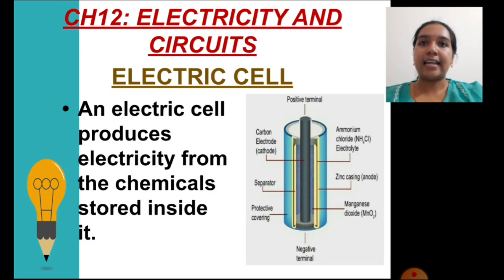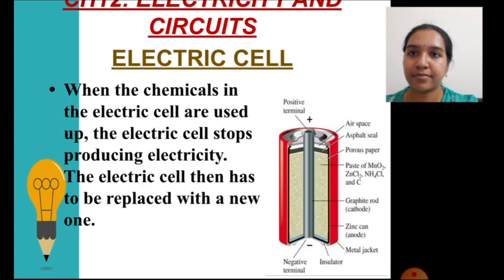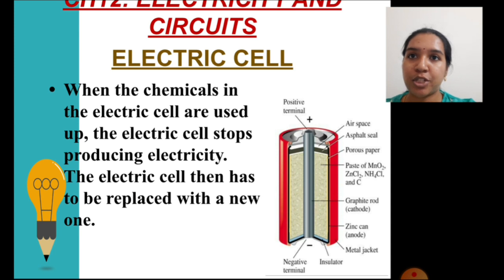Electricity in an electric cell is produced from chemicals stored in it. We usually replace the electric cells in any electric device timely because the chemicals present in an electric cell which produce electricity are used up.